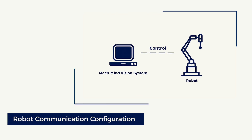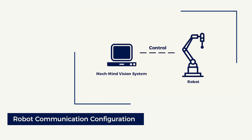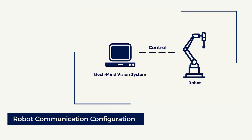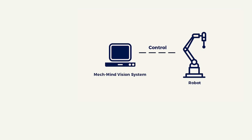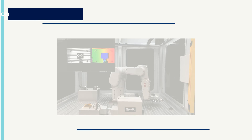Next, in robot communication configuration, robot programs and configuration files will be loaded into the robot system, so that communication between the robot and the vision system can be established.